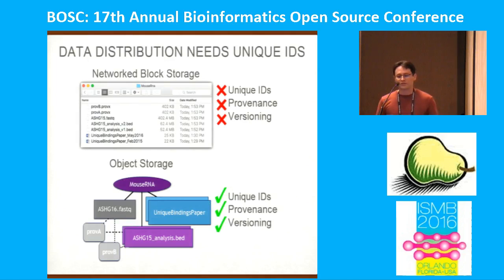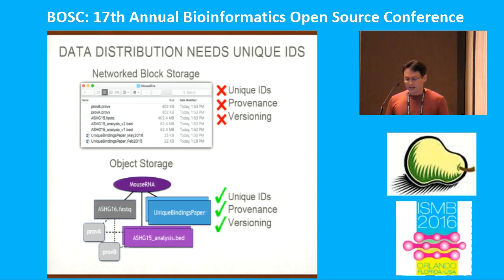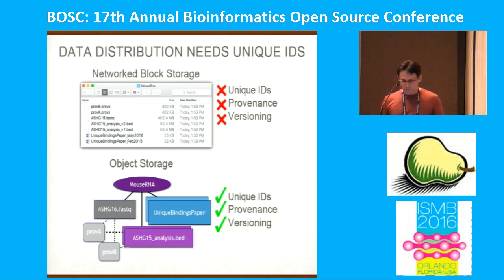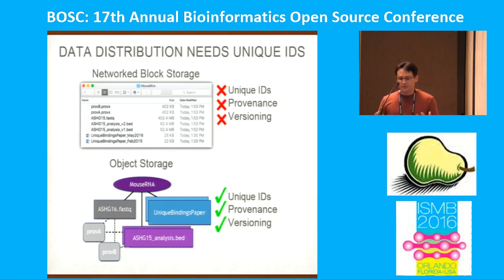Network block storage doesn't lend itself to solving these issues. Without unique IDs per file, it's difficult to track provenance. Given the lack of versioning, users resort to file name mangling. The standard files and tools are unaware of the hidden relationships between your files, making managing bioinformatics data difficult.